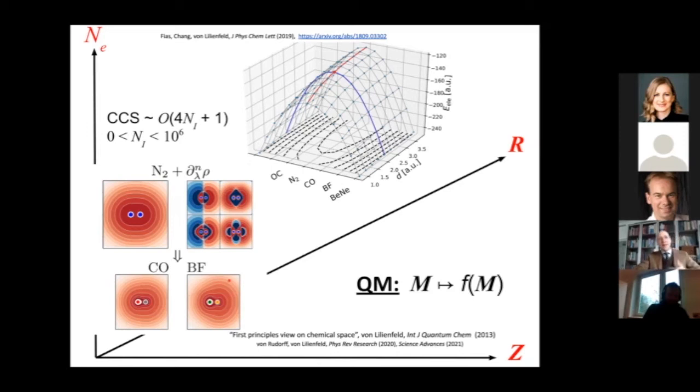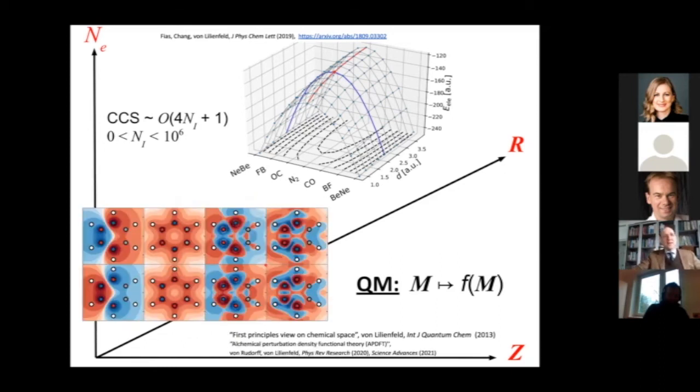You can predict the electron density of CO or BF based on N2 and its expansion in its derivatives. You see this works very well. Another recent thing which just got accepted in Science Advances is that we discovered a symmetry relation. CO and OC are trivially symmetric, but if you go to higher dimensions, for instance benzene, you can change the composition in non-trivial ways.